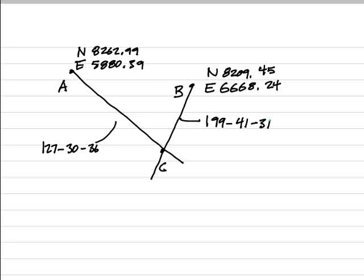To start this process, I have to inverse between the two known points that I have. In this case, I know the coordinates of A and B, and I know the direction from B to C and from A to C. But C is that intersection point, and I need to determine its coordinate. So I have to start with an indirect approach, and that is I must simply inverse between my two known points.